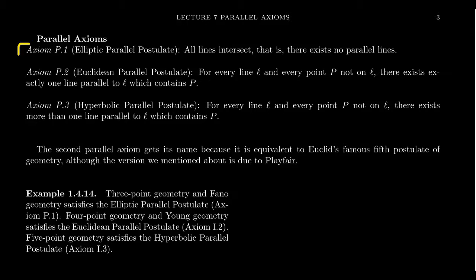These three alternatives, shown on the screen right now, you cannot have all three of them. In fact, you can't even have two of them because they're mutually exclusive. If one of these statements were true, the other statements would have to be false in that geometry. That's why they're often called parallel alternatives.